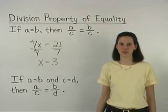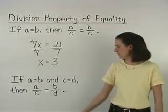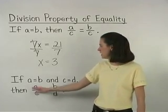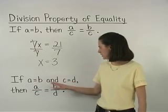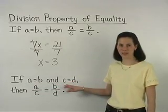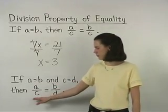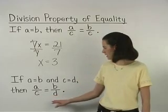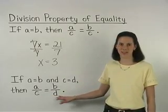Another way of stating the division property of equality is as follows: If A equals B and C equals D, then A divided by C equals B divided by D.